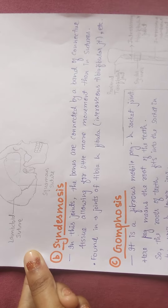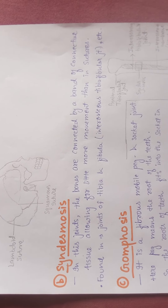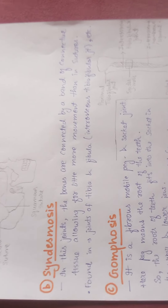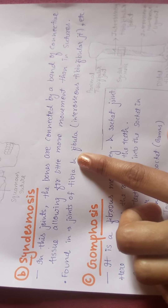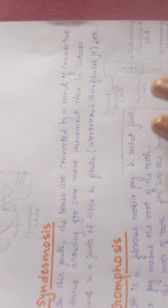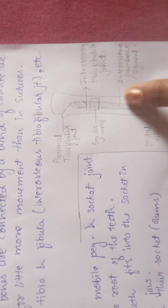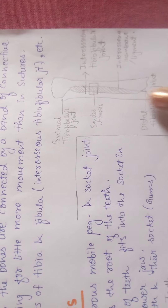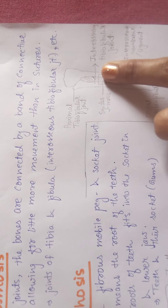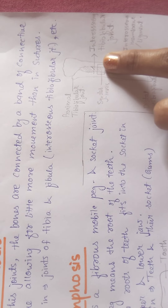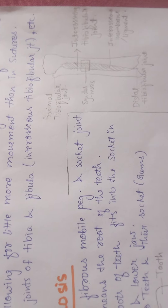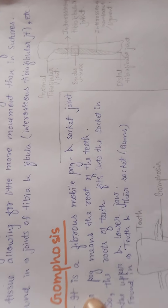Next, we are talking about syndesmosis. The bones are connected with a band of connective tissue. For example, the joint between tibia and fibula is the interosseous tibio-fibular joint. This is the tibia and fibula. This is the interosseous ligament or membrane. This is syndesmosis. It provides a little bit of movement compared to sutures.